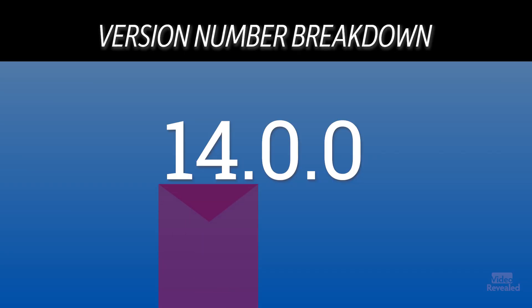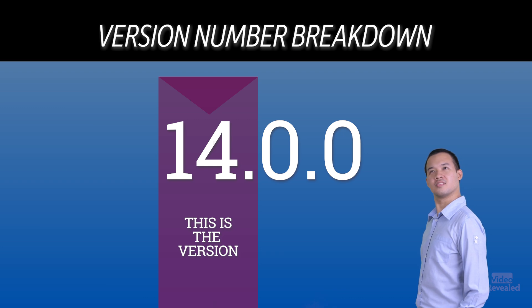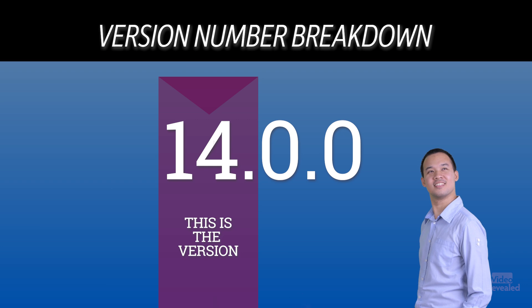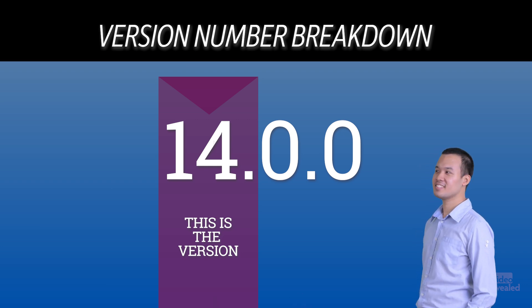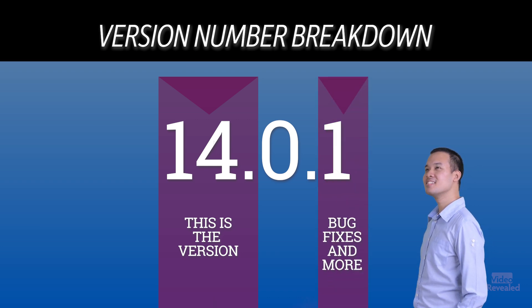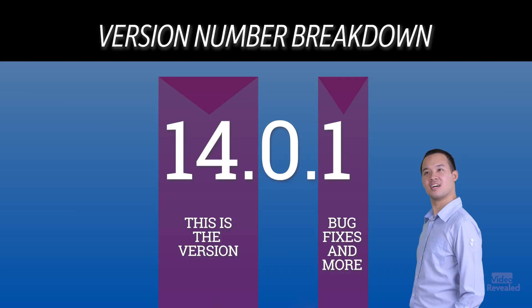So you can see this is version 14.0.0. What does that actually mean? Well, 14 is the version number of the whole product at this point. Point zero point zero means this is the release version with no changes. Once Adobe makes any changes, you'll see a point one — this usually means bug fixes, but it could also mean a couple of features that didn't make it in time to ship in the 14.0 version. Sometimes we're lucky enough to get those dropped in at a point one, but usually it is a bug fix.